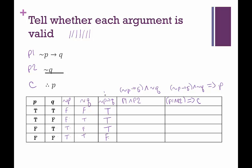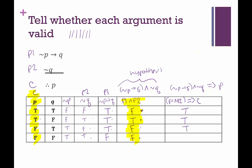Now looking at P1 and P2, in order for this conjunction to be true, both must be true. True and false is false. True and true is true. True and false is false. False and true is false. For our final column, this conjunction of premises is the hypothesis and the conclusion is over here. Since this is a conditional, we need the hypothesis to be false or the conclusion to be true.